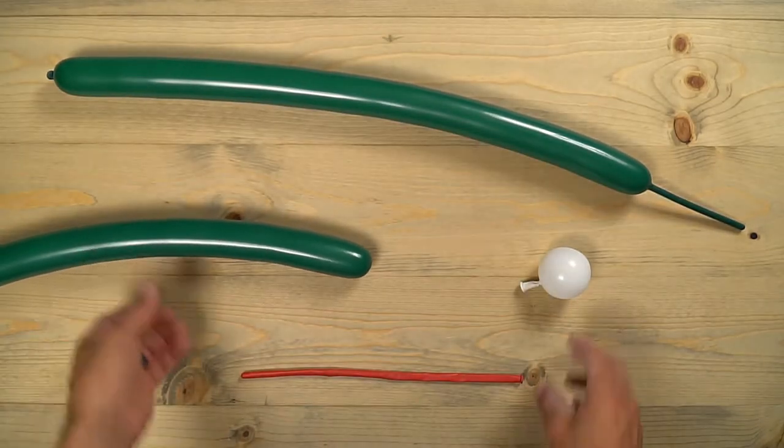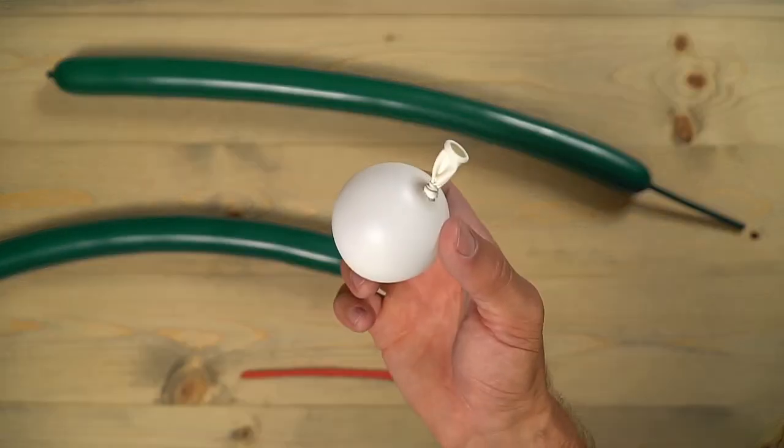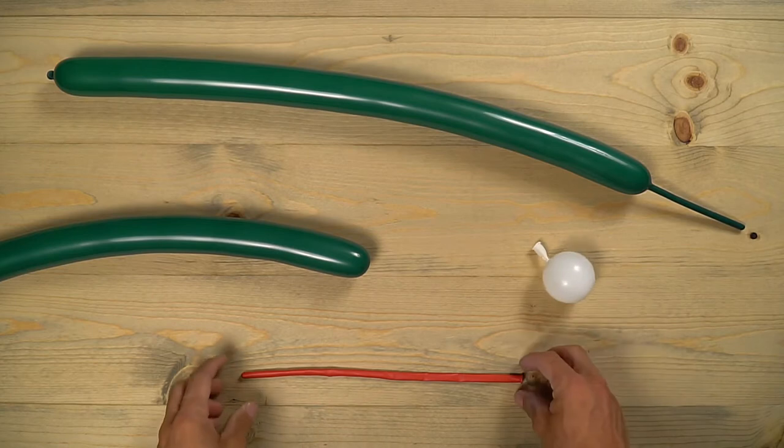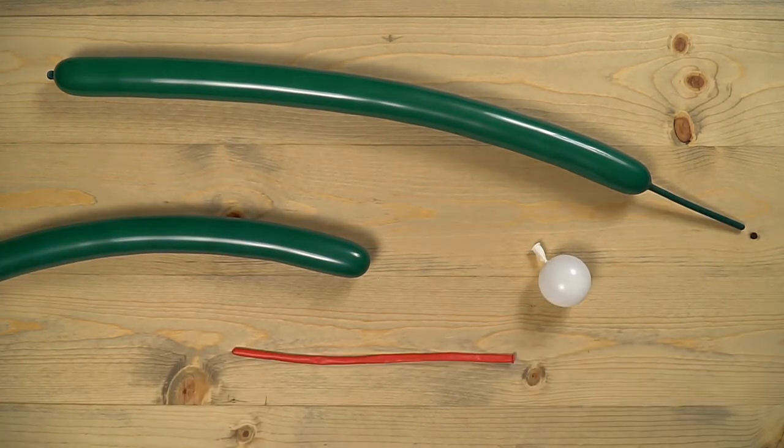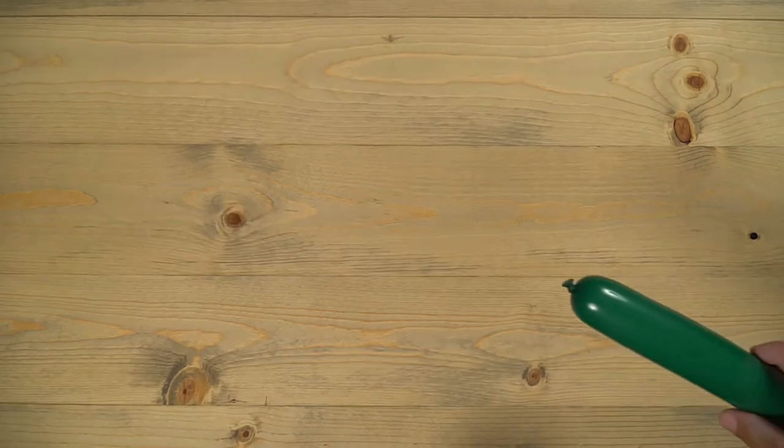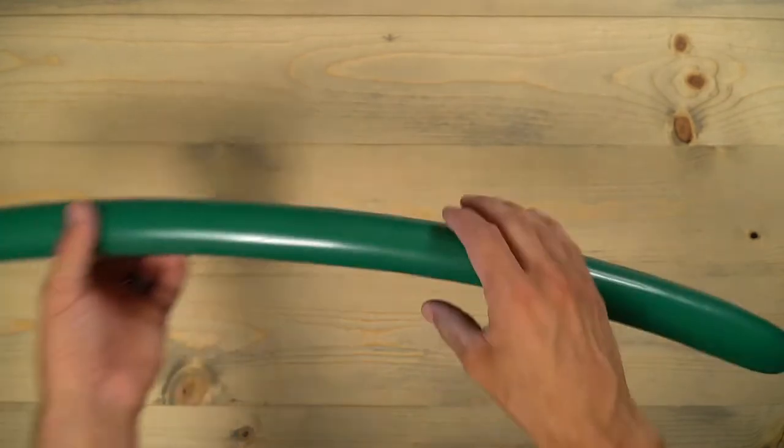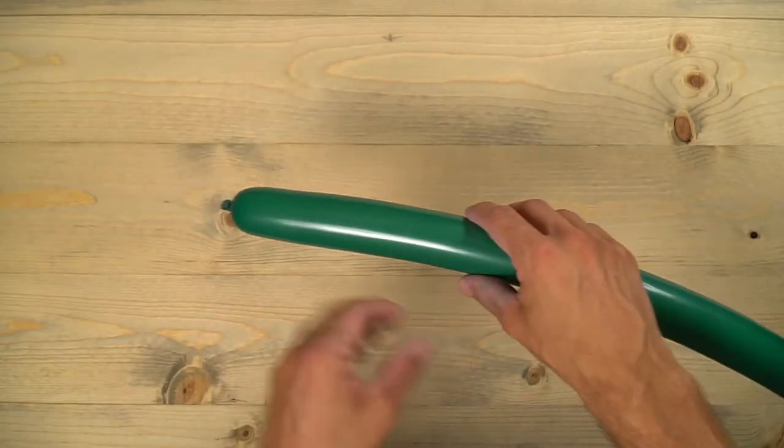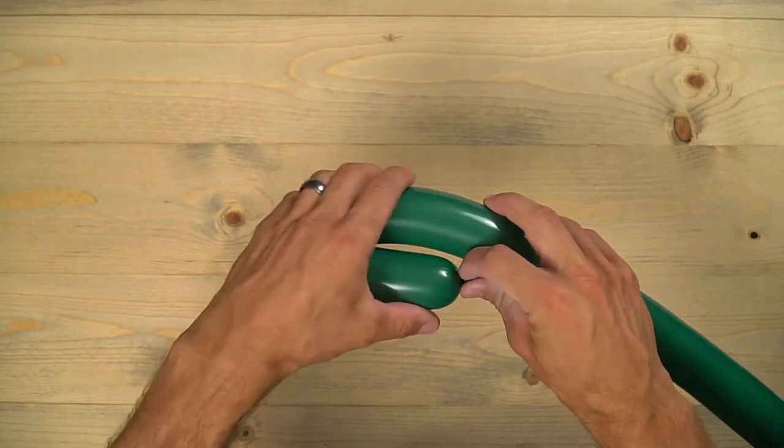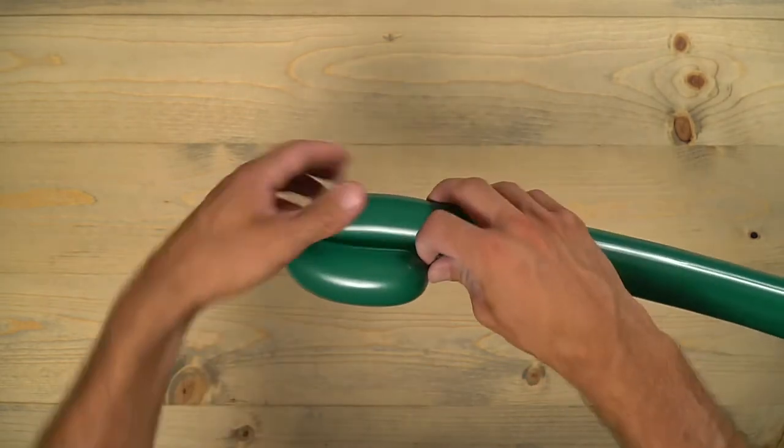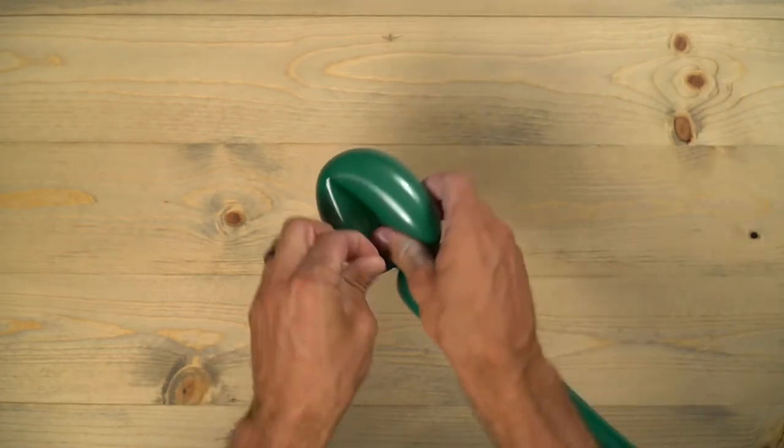Then we have this for the eyes: five-inch white round, right about that much, and an uninflated red balloon that's going to be for the tongue. Grab that first green balloon; you can use whatever color you want. We're going to start by doing a loop twist right about there. Twist that around and then push that nozzle through a couple times.